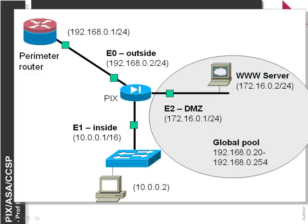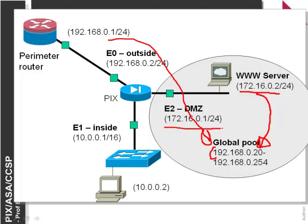Typically the PIX uses network address translation. We define a global pool which remaps the local address into a global address. So for example 172.16.0.2 will be seen from the outside with one of the pool addresses. From outside, this port can be accessed from one of these addresses within the pool — for example 192.168.0.20 for the inside port and 192.168.0.21 for the web server.